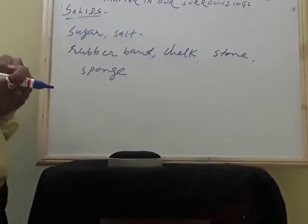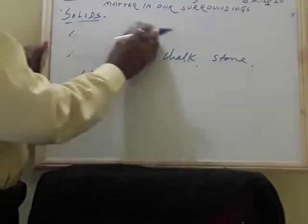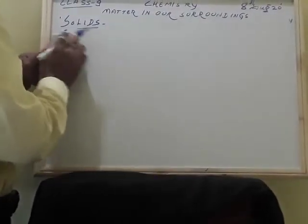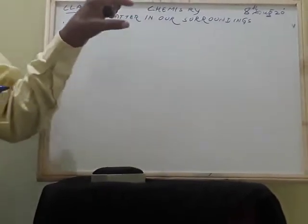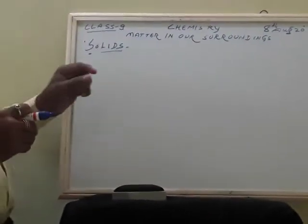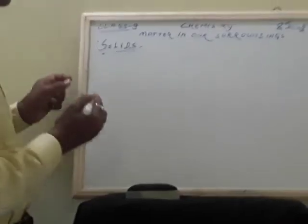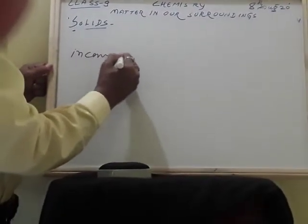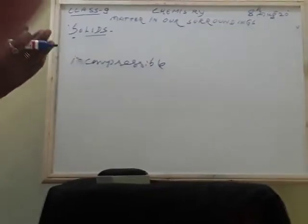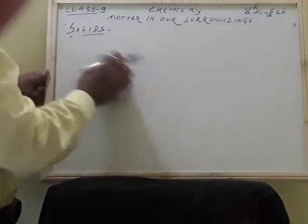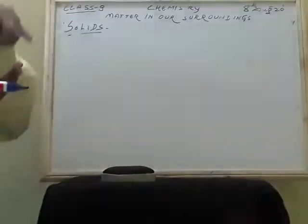When you take sugar and salt, they have different boundaries, shape, and size. So the properties of solids are: solids have different shape, boundaries, and size; solids have different volume; solids are rigid in nature; solids are incompressible and cannot be compressed easily even if you apply force from both sides. The particles are not moving from their positions — they stay at the same place.